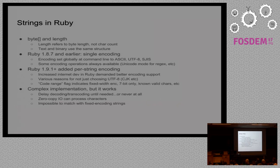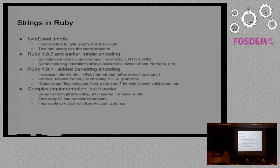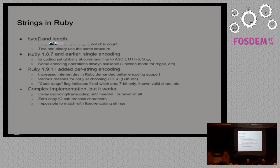Strings in Ruby are basically just a byte array and a length, similar to the character array and length in Java. The length here refers to the byte length, not the character count. Up through Ruby 1.8.7, there was a single global encoding you could set. At the command line it would default to assuming ASCII, but you could do some Unicode operations, specify that all strings were Unicode, or specify other encodings like Shift-JIS. Some operations specific to Unicode were always available — like a flag on regular expressions to treat them as Unicode rather than ASCII. That worked okay.